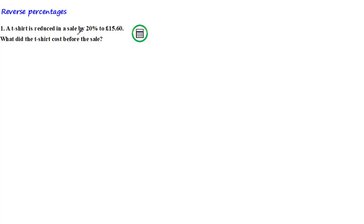So let's have a look at the first question. A t-shirt is reduced in a sale by 20% to £15.60. What did the t-shirt cost before the sale? Now many students would try to solve this problem by adding 20% of this amount back on to £15.60, but the problem is that you're taking 20% of the new value, when really you should be taking 20% of the original value, which we don't know yet.